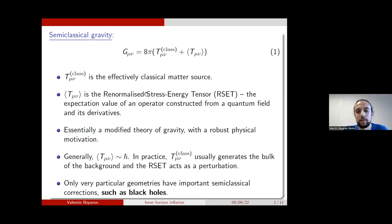we have this renormalized stress-energy tensor, which is basically the expectation value of an operator constructed from the quantum fields which reside on the space-time. In particular, for this work I've done, I'm using a massive scalar field to calculate this quantity, which is often used as a test field to probe effects in curved spacetimes. So this is essentially like a modified theory of gravity, but it has a clear physical motivation. And generally, the renormalized stress-energy tensor is small, it's suppressed by a Planck constant.